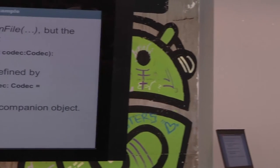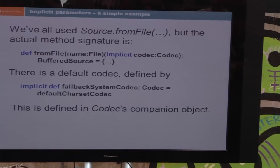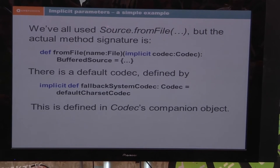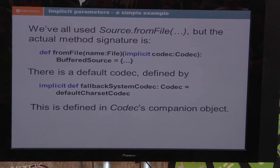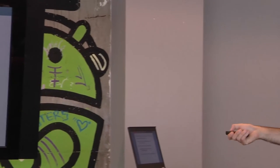We've all used implicit parameters without noticing — anybody who's written even a basic script in Scala has used this. There's an implicit parameter, the codec, which is brought in implicitly. The fallback is a system codec on a trait it inherits from, which brings in the default character set of the system. You can always put in whichever encoding you want, but if you don't specify anything, it's not going to complain — it's going to use the default. Very sensible behavior.